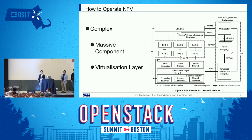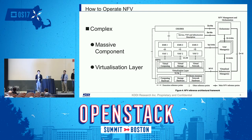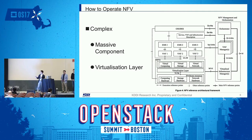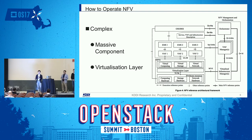Generally speaking, in NFV, creating new network services is very easy because the orchestrator manages all components. But how to operate NFV? As you know, the NFV architecture has a lot of complex components — not only VNF, but also the orchestrator, the VNF manager, and OpenStack as a base. There is also a virtualization layer. We have to consider using acceleration techniques like DPDK, SR-IOV, and pass-through to accelerate internal packet processing.